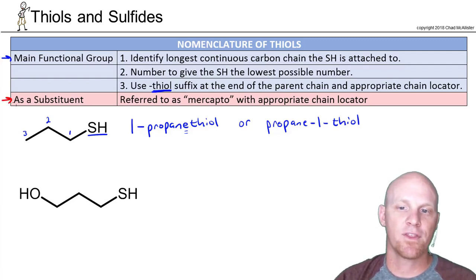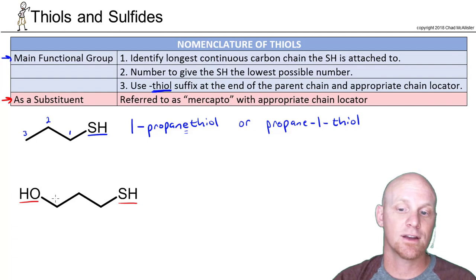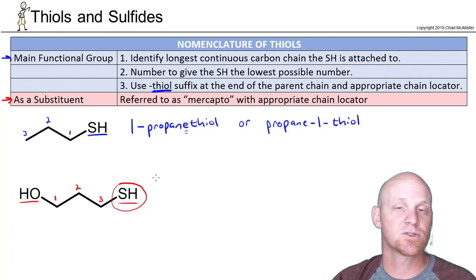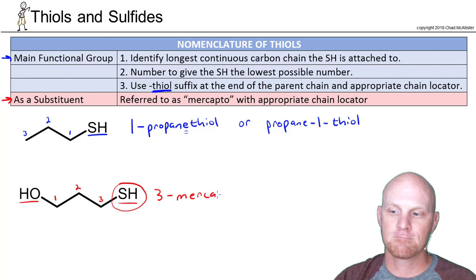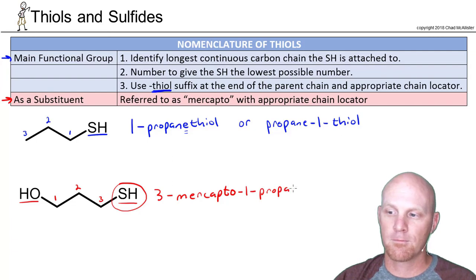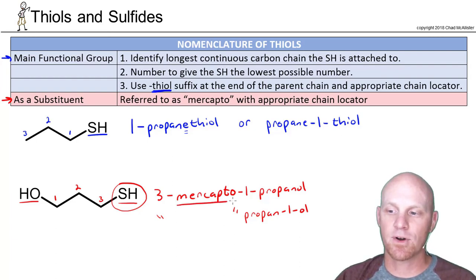Now if your thiol is not the major substituent — for example, if you've got both an alcohol and a thiol — the alcohol is given higher priority in organic chemistry. So with the alcohol getting higher priority, I want to number the longest carbon chain to give the alcohol the lowest number, and I'm going to name this as an alcohol, not as a thiol. The thiol is then named as a 'mercapto' substituent. So we'll say 3-mercapto, and then 1-propanol or propane-1-ol. Both are acceptable. The big key is that when the thiol is not the most important functional group, it's named as a mercapto substituent.